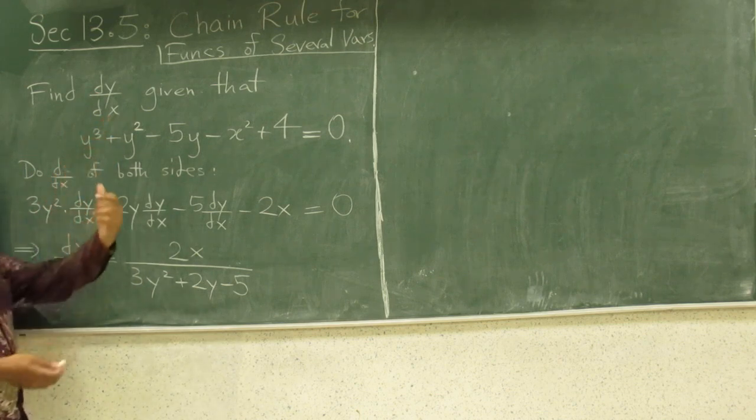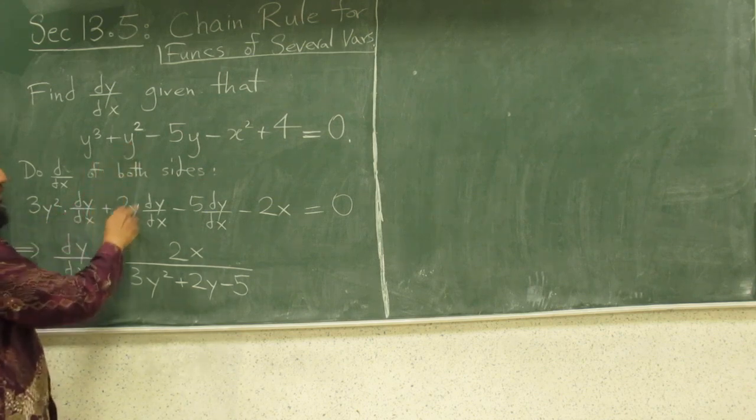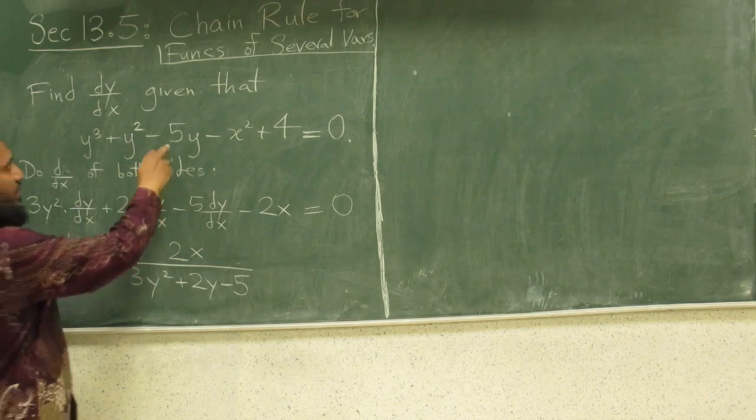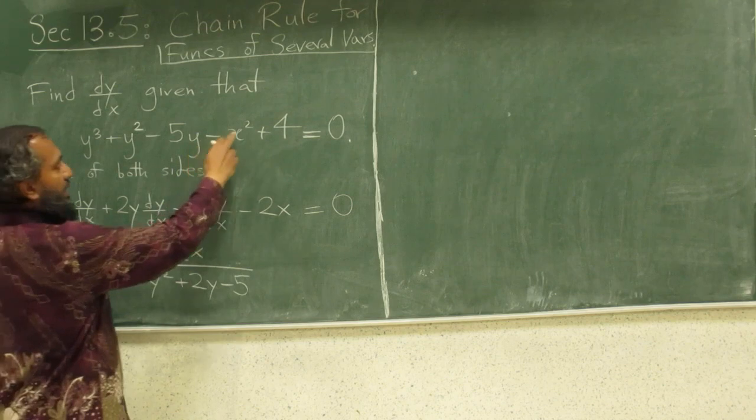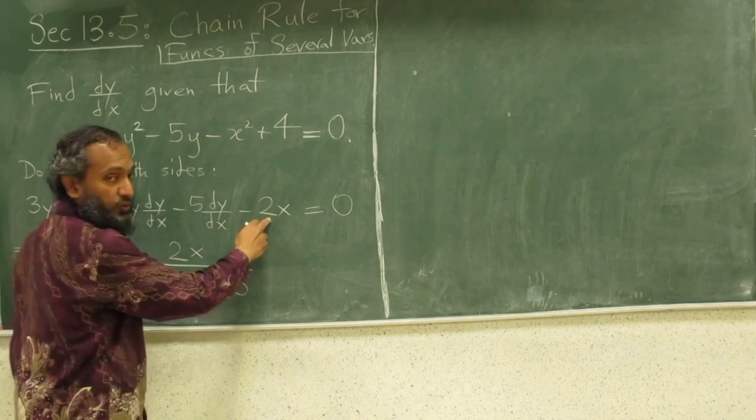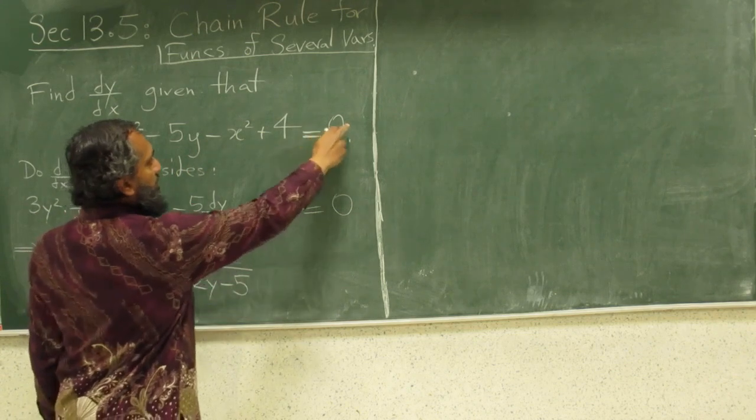So, since by chain rule, by chain rule of calc 1, it will be 3y squared times y prime, or dy dx, plus 2y, derivative of y squared is 2y times dy dx, minus 5 constant, derivative of y is dy dx, minus derivative of x squared is 2x, equals derivative of 4 is 0, equals derivative of 0 is 0.